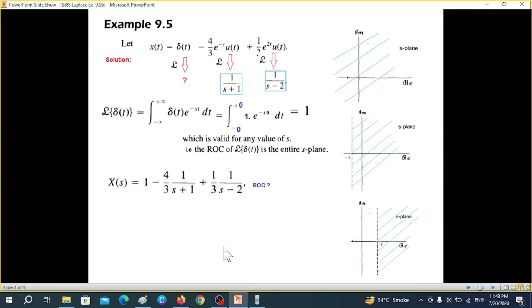Now as we have discussed earlier also that we actually take the intersection of two function or three function as the ROC. So when these three you take intersection, this is common in all three. Therefore this will be our ROC applicable to the total function. So we can see that real s is greater than two as our ROC.